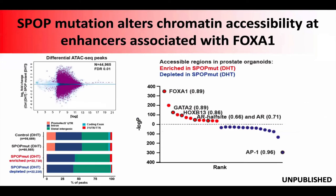This suggests SPOP mutation alone is sufficient to flip this switch and start driving the androgen receptor system to look more like human prostate cancer. When we look at chromatin accessibility with ATAC-seq — looking at open and closed chromatin to get a sense of where the genome is being utilized for regulatory elements — the primary differences between SPOP mutants and controls are not happening in promoters, but at introns and distal intergenic regions consistent with enhancers. We validated this by looking at H3K4 dimethyl and H3K27 acetyl ChIP-seq to confirm these are active enhancers that are changing.